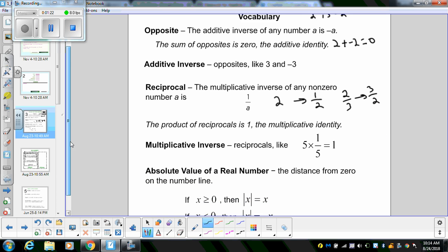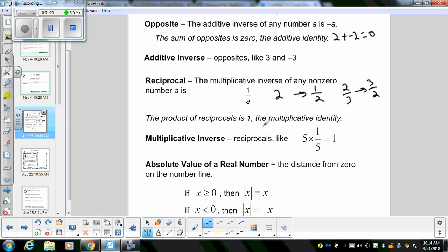And the product of reciprocals is 1, which is the multiplicative identity. Basically all that means if you take 2 times 1 half, multiply across, you'll get 1. Same thing if you took 2 thirds times 3 halves, you'll multiply to 1. That's how you know you got the correct reciprocal. You also have the multiplicative inverse, which is reciprocals, like 5 times 1 to 5 equals 1.